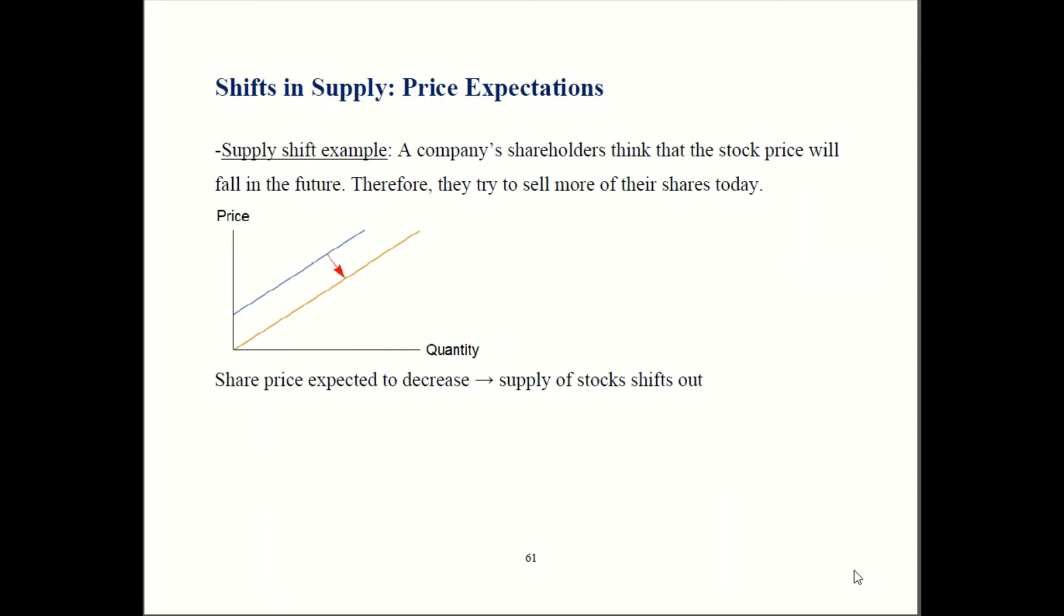So as a result, here's what the graph is going to look like. Here is our old supply curve over here in blue. Because we are trying to offload the shares while we still can, we're going to increase the supply of shares being sold. So we're going to shift out to this golden line over here. So you can see at the same price, we're now selling more than we used to.